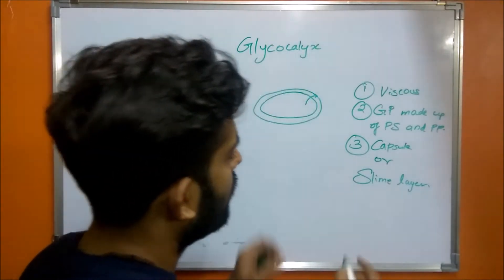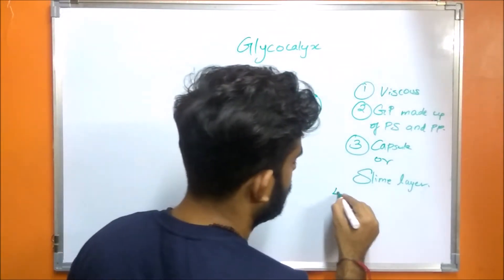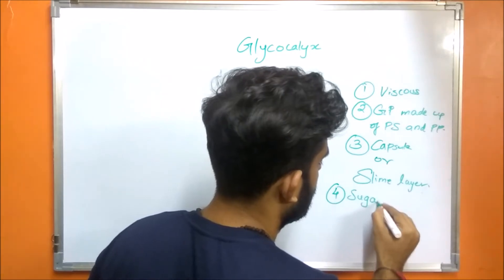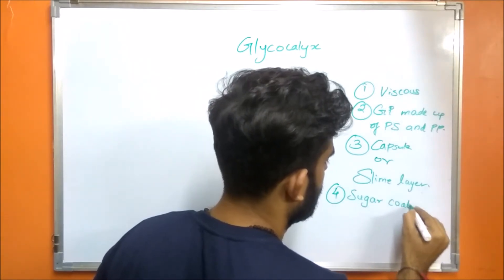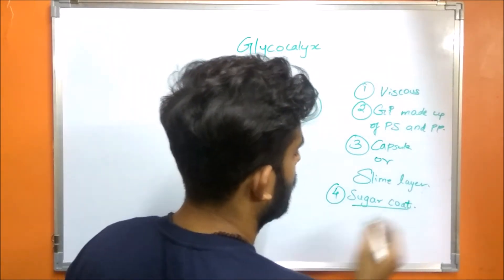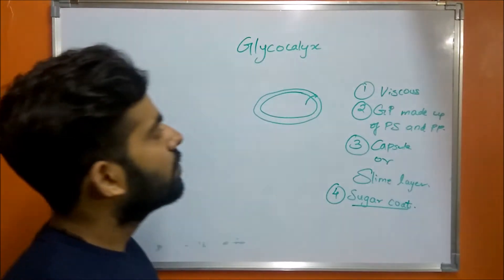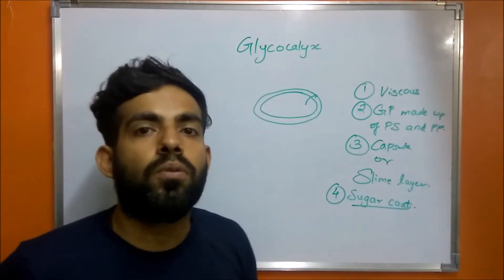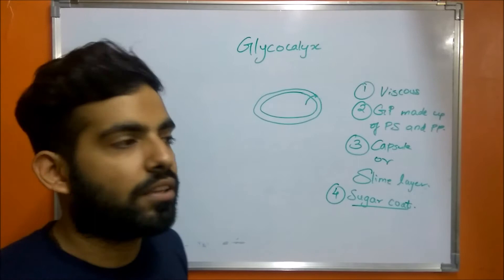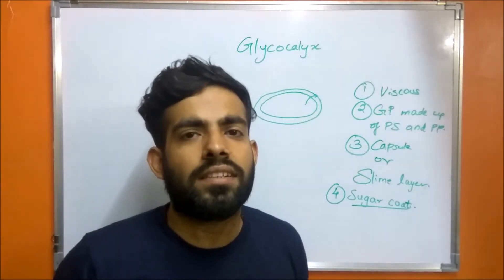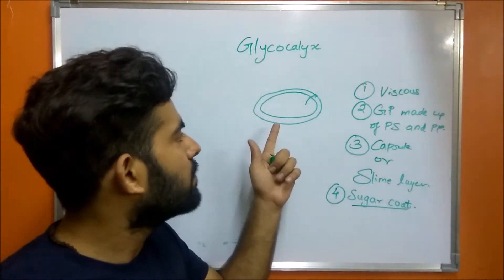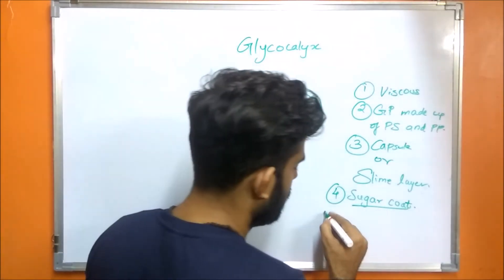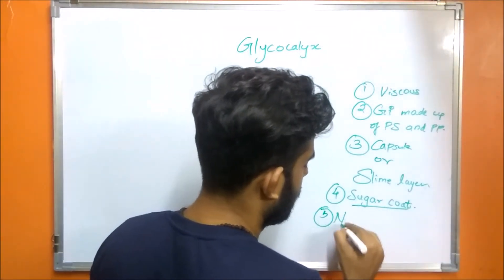This glycocalyx is also known as a sugar coat, which covers the exterior part of the cell wall. To determine the presence of glycocalyx, it is important to perform negative staining.